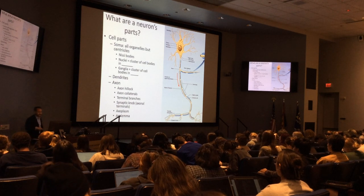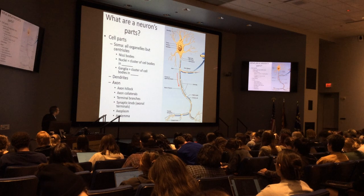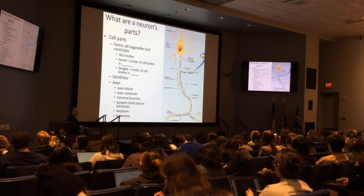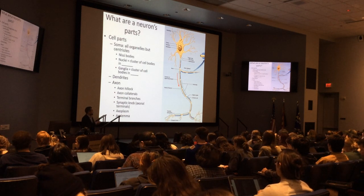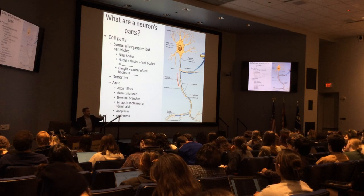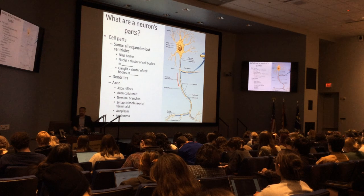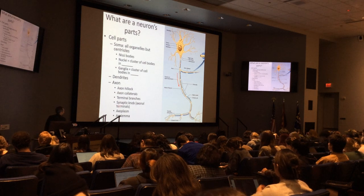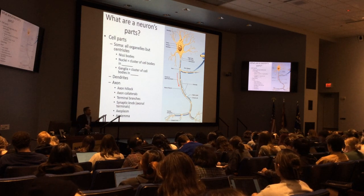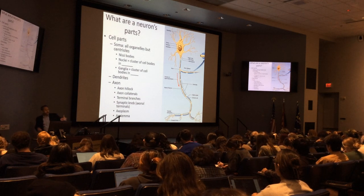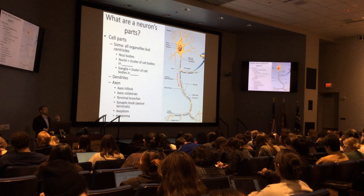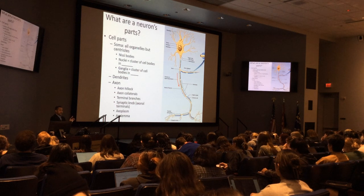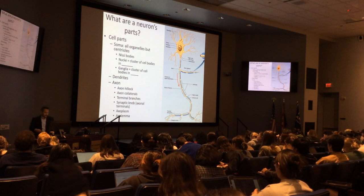Axon collaterals send offshoots to other nerves or pathways — this is how the CNS reroutes. Terminal branches end in a synaptic knob or axon terminal and innervate either a nerve or a muscle. If it's a muscle, it's called a neuromuscular junction. If it's another nerve, a neurotransmitter crosses the gap and allows the next neuron to receive it on the other side to propagate the action potential.